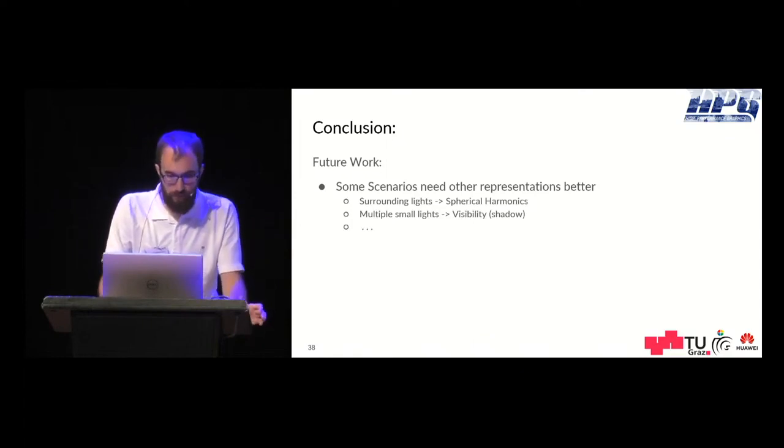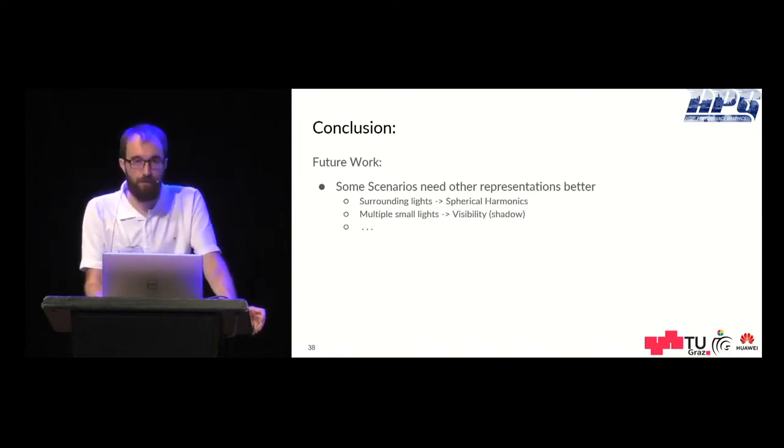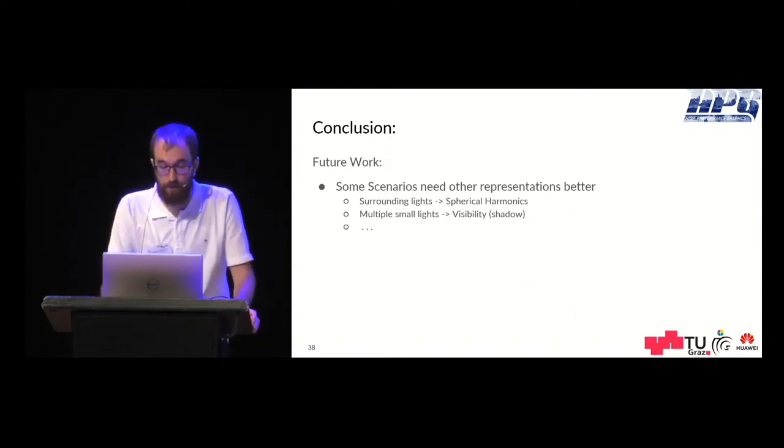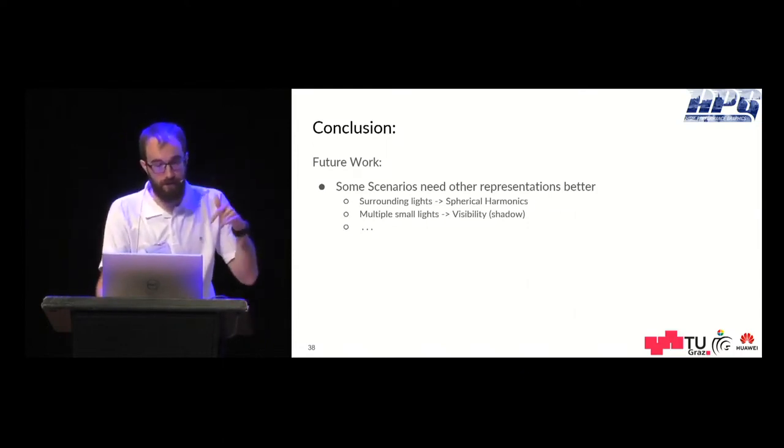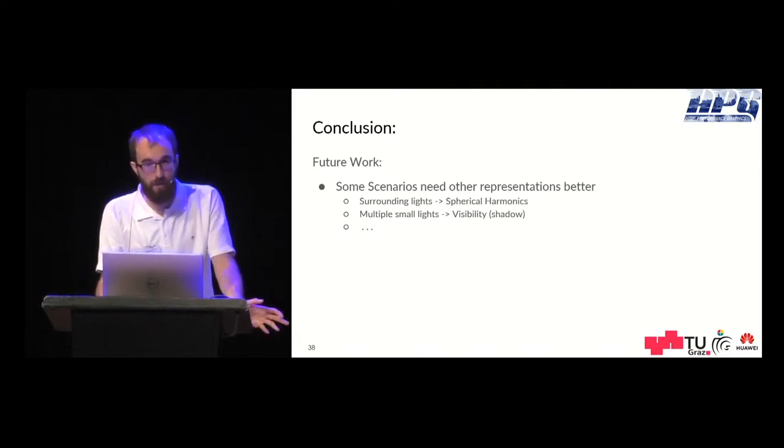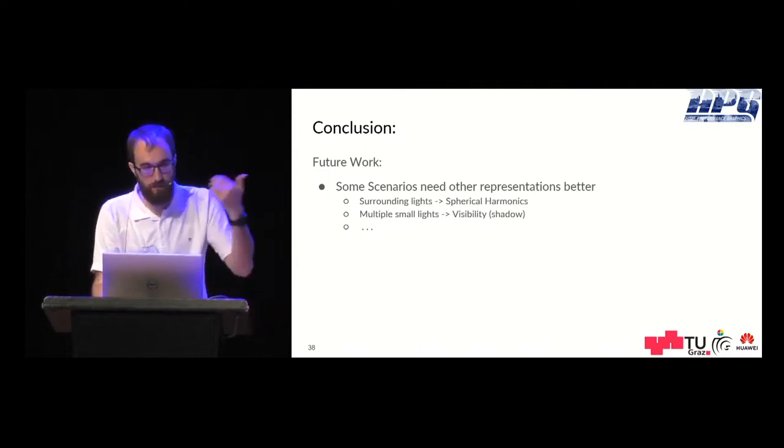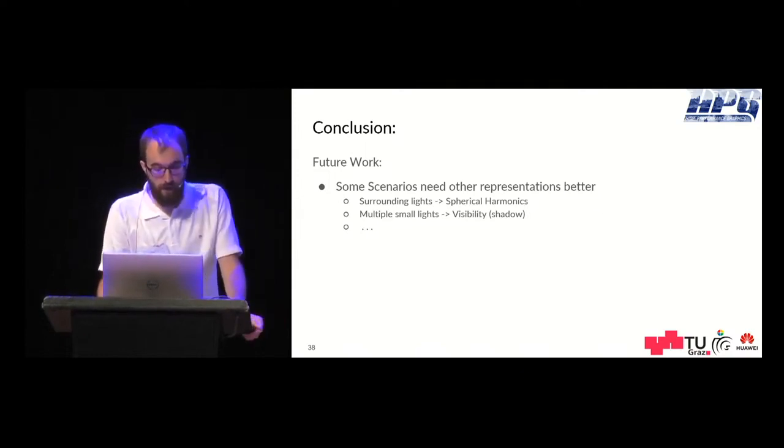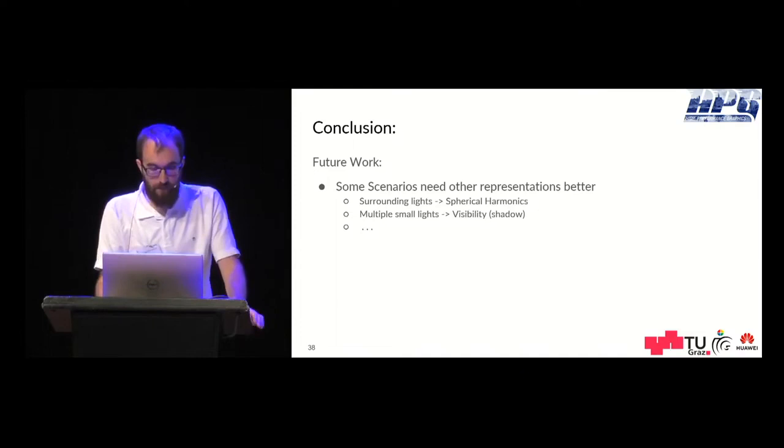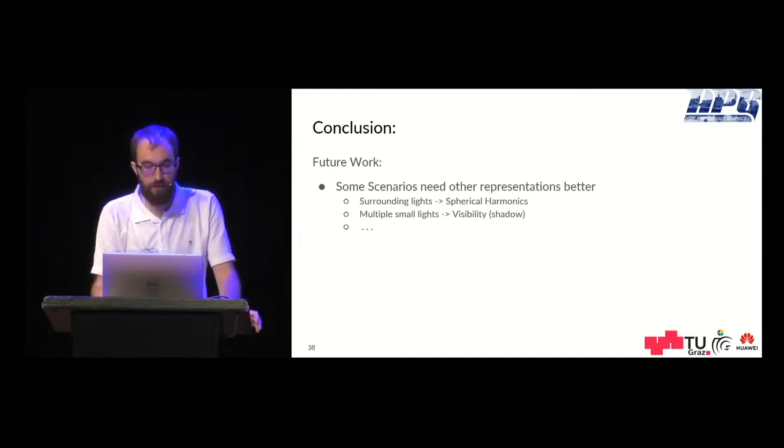As shown before this expression isn't always enough to express all light scenarios. For example if you have surrounding lights then spherical harmonics would be better. Or you have just multiple small lights where you can use visibility caching and this would be faster. So simple shadow mapping and this kind of stuff would be faster. A complete system would of course include those other methods and switch between them and that's something for future work.